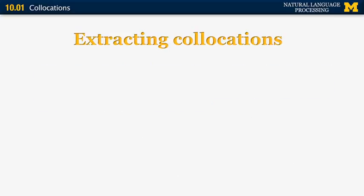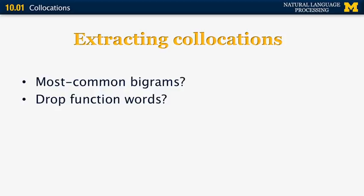So how do we extract collocations automatically from text? Do we just take the most common bigrams or trigrams? It turns out this is not the right approach because very often those correspond to just free word combinations. What if we dump some of the function words? That also doesn't give us additional mileage. One other possibility is to look at part-of-speech sequences, but collocations are fairly arbitrary and there is no reliable way to extract them based on part-of-speech sequences.